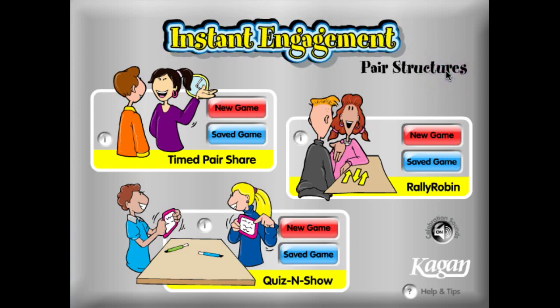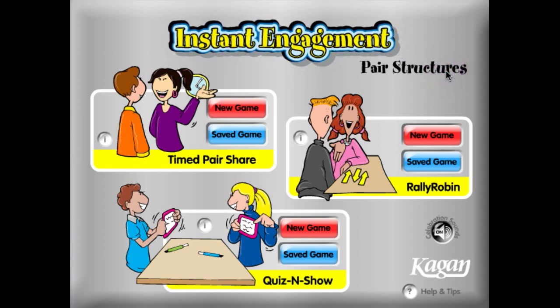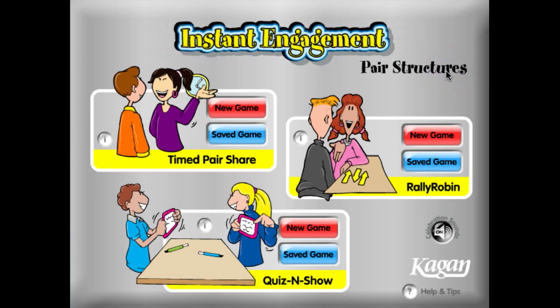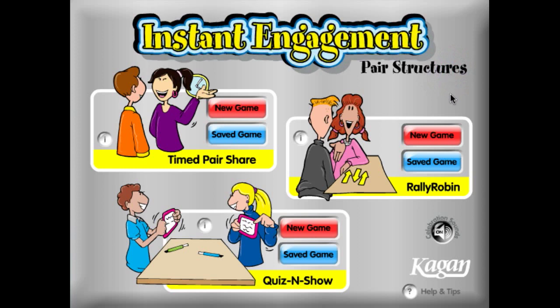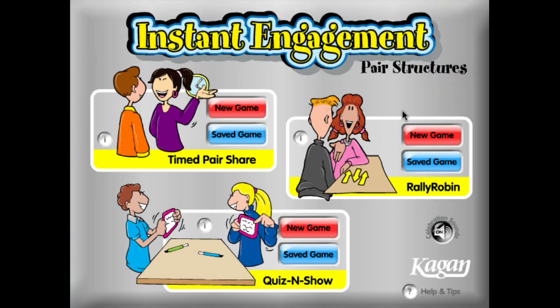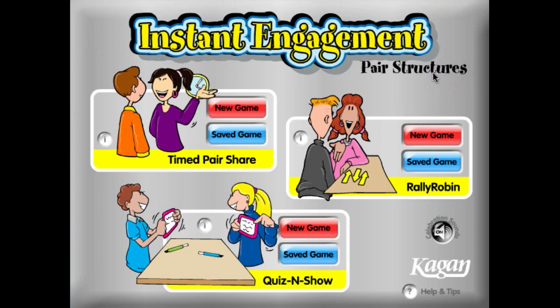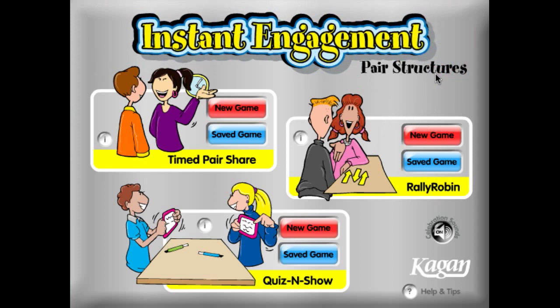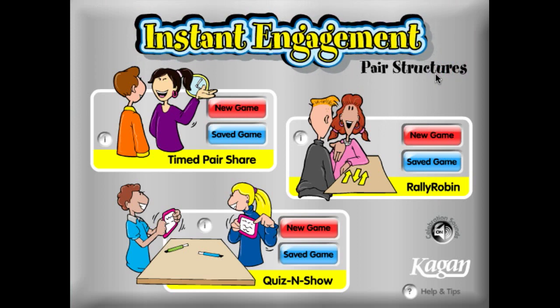Hello and welcome to Kagan's Instant Engagement software demo. We're going to look at the structure Rally Robin from within the pair structures set.